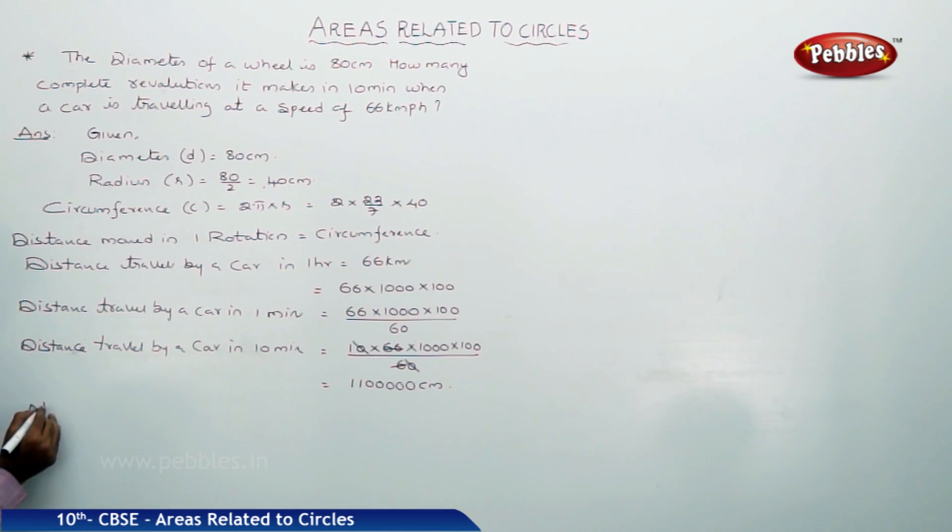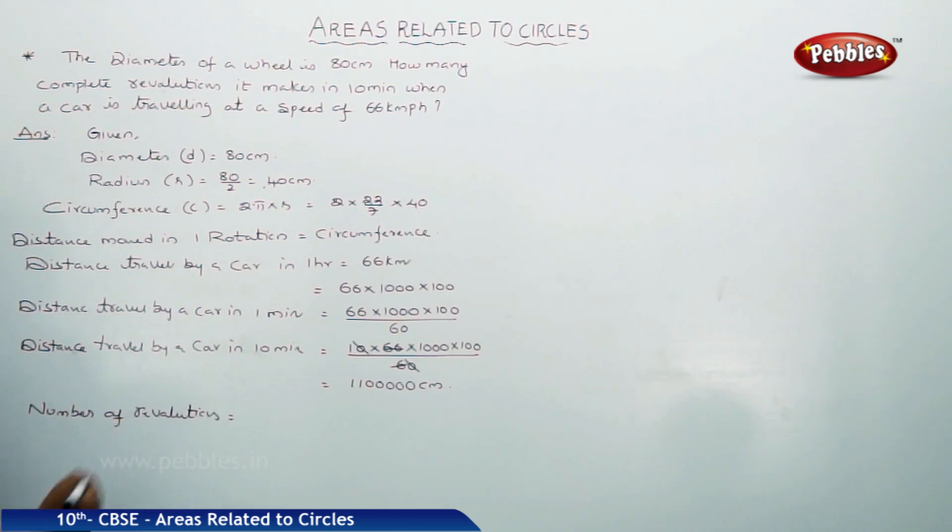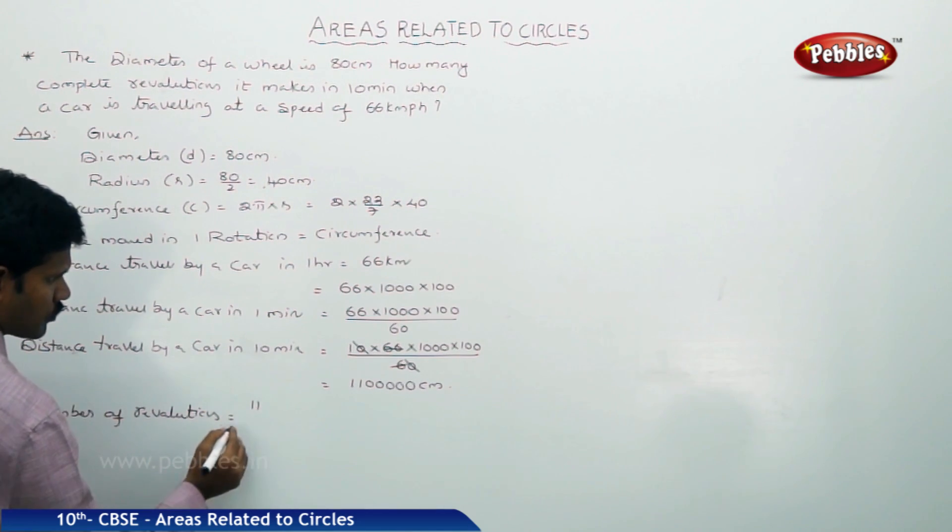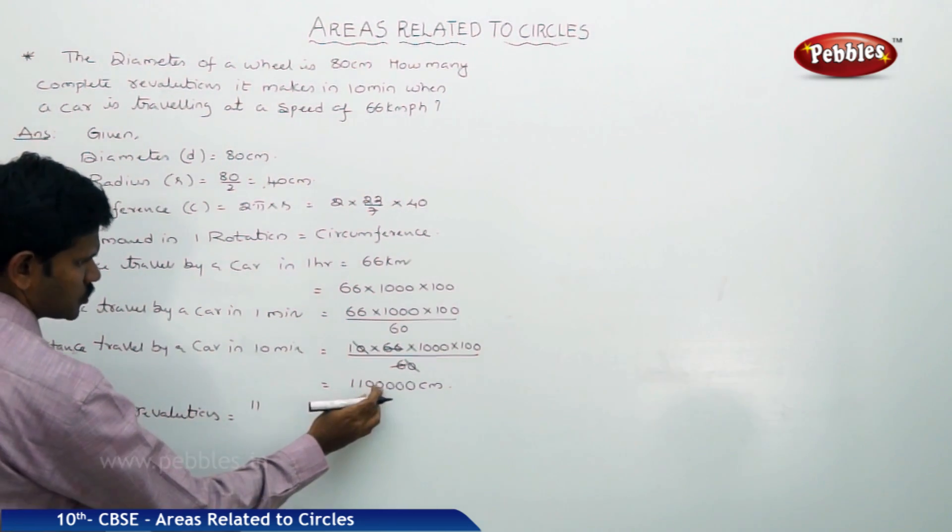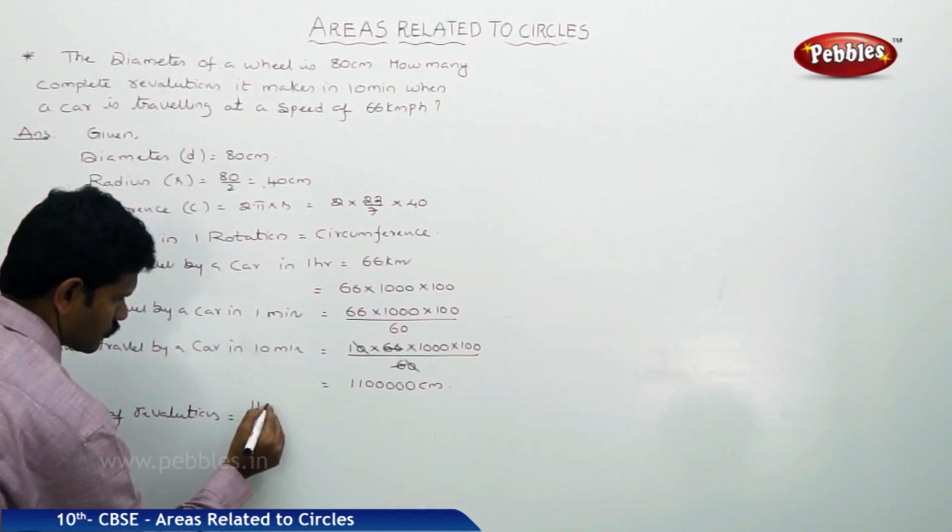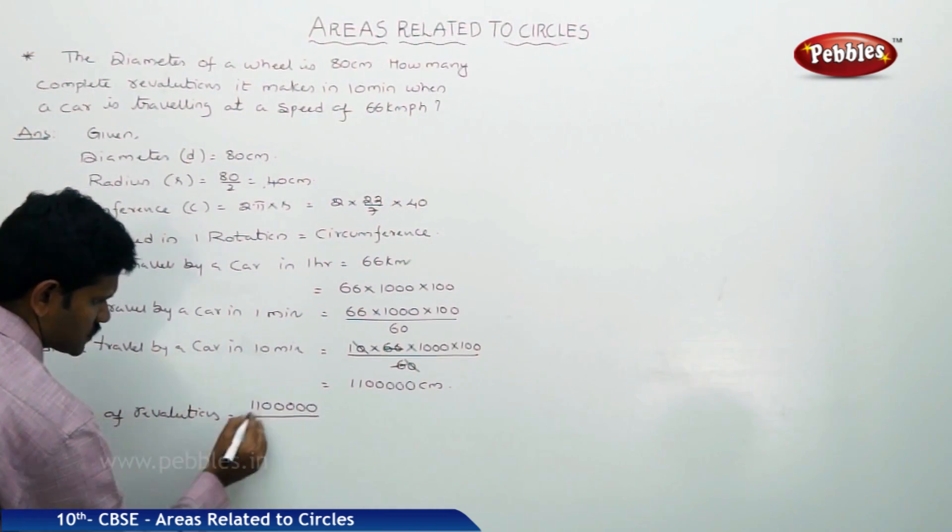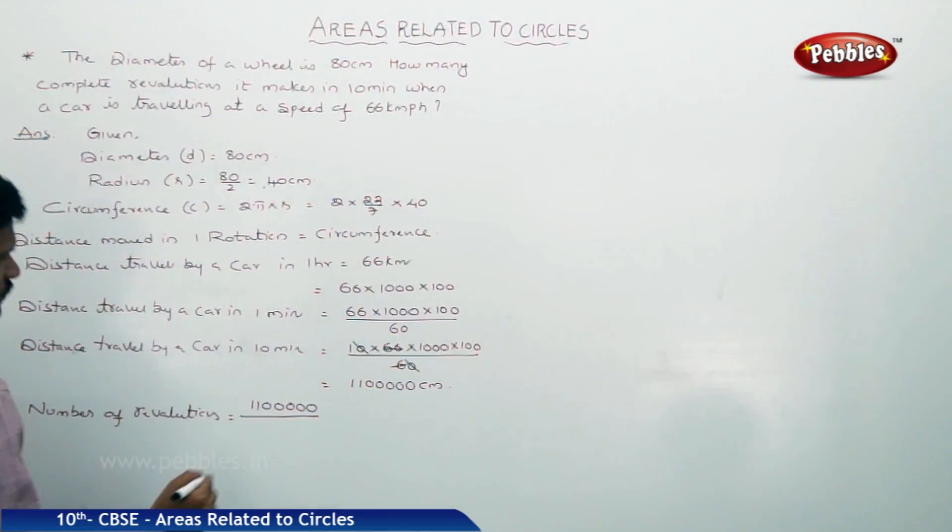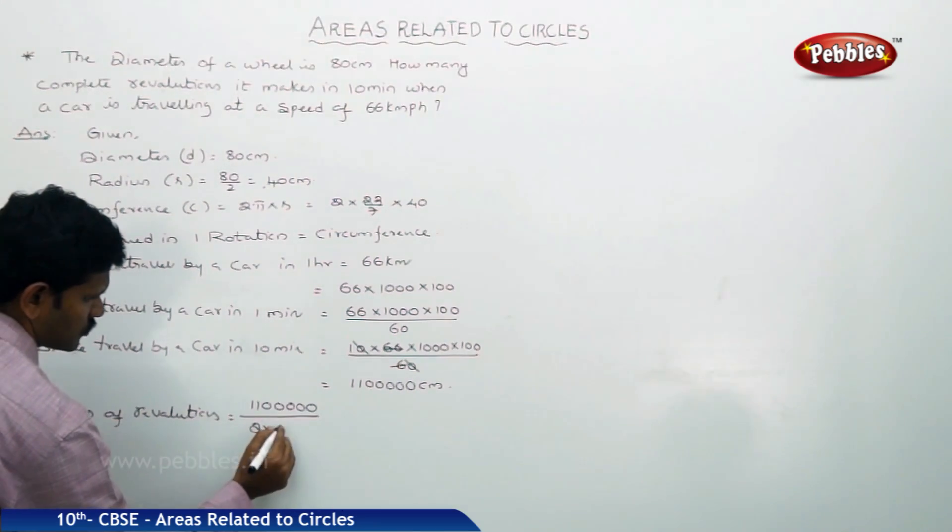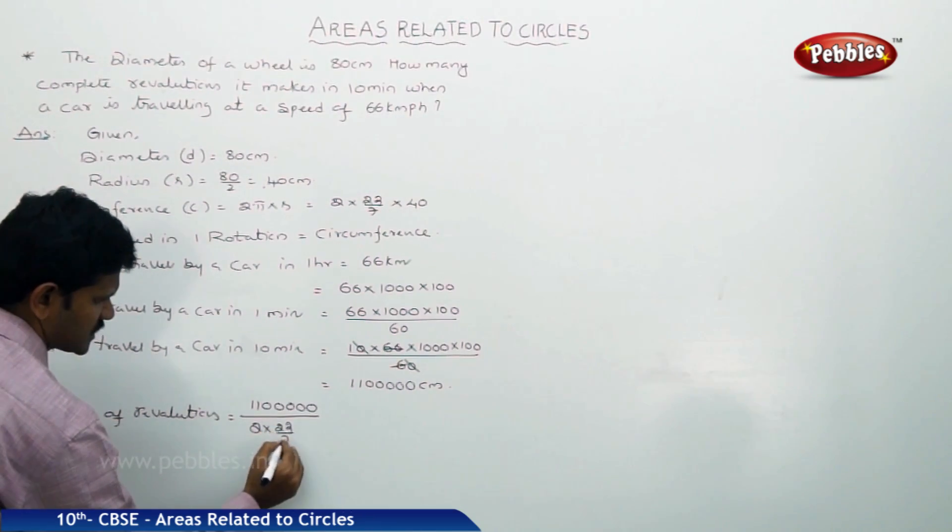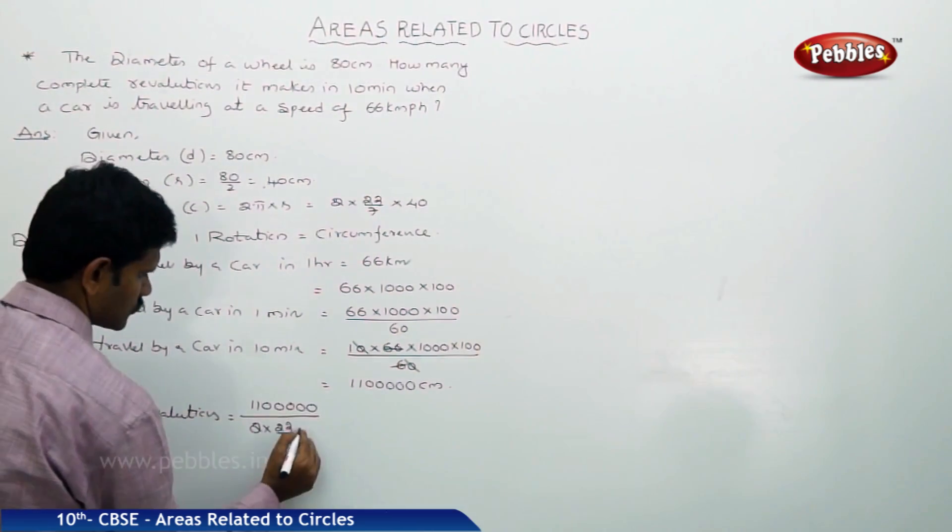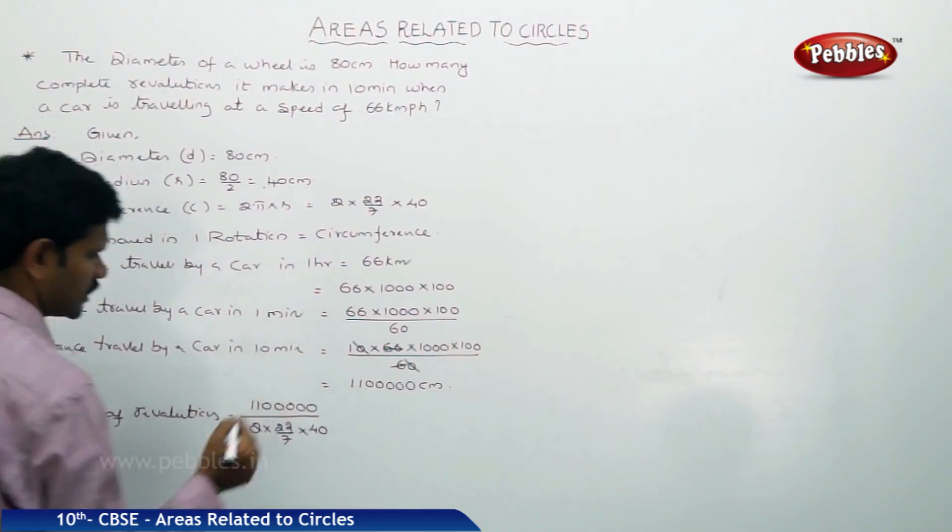Therefore, number of revolutions is equal to 11, 1, 2, 3, 4, 5, 1, 2, 3, 4, 5 zeros by circumference 2 times 22 by 7 times 40.